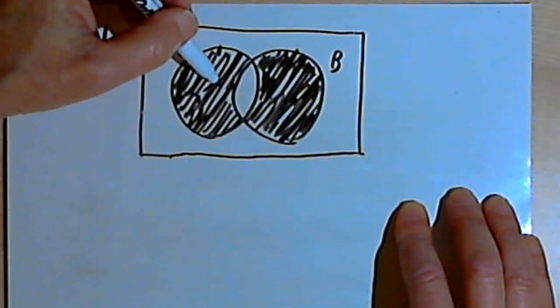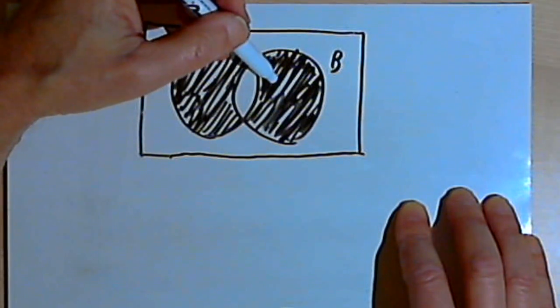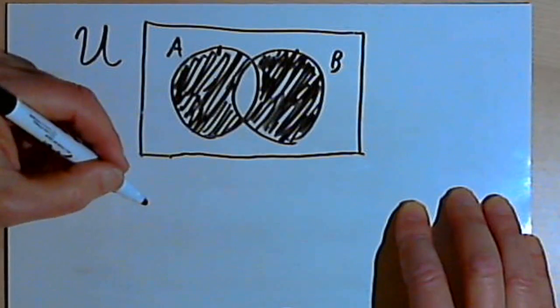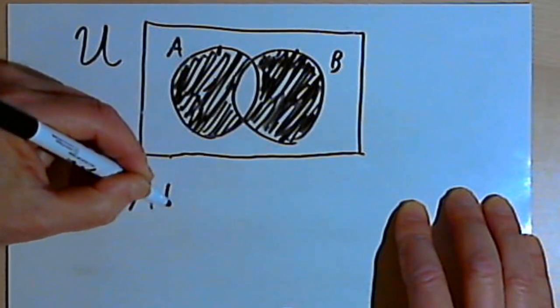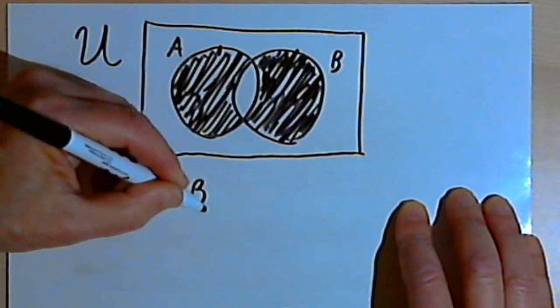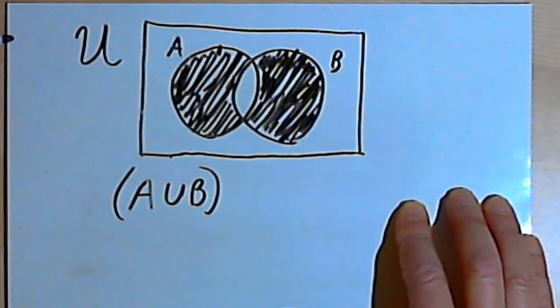So A and B are completely shaded. Let's start with that part of the phrase. Well if A and B are completely shaded, that would be the union of A and B. So I'm going to write A union B in parentheses.